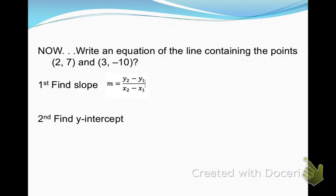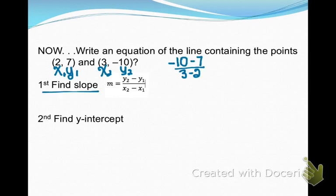So I would like you to write an equation of a line that goes through these two points, 2, 7 and 3, negative 10. This is a two-step process. First you find the slope, then you find the y-intercept. Well, notice I've given you a handy-dandy little formula for the slope. So I'm going to label my points x1, y1, x2, y2, and I'm going to use this formula and just plug those numbers in. And when I do that, I get negative 17 over 1, which I'm going to simplify to negative 17. So the slope of this line is negative 17.